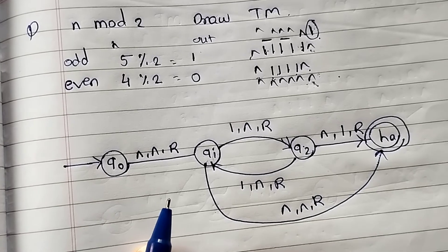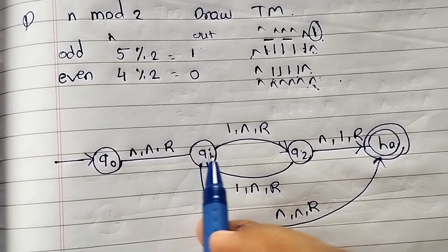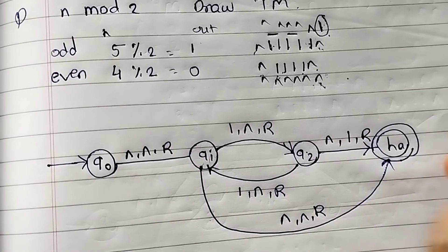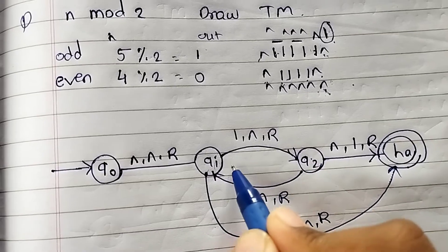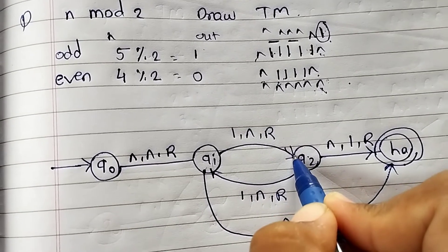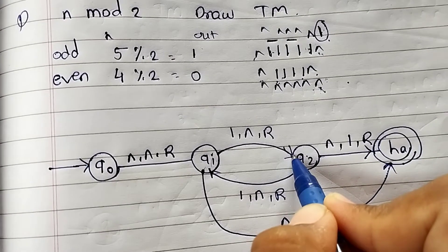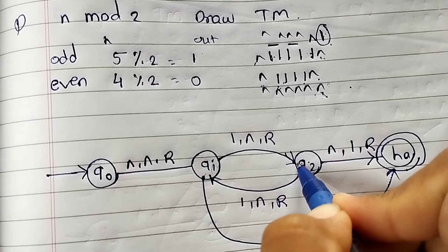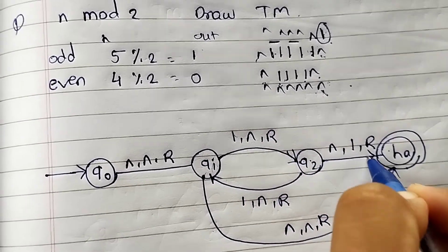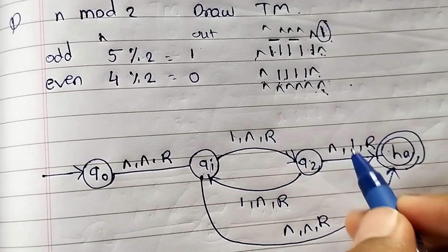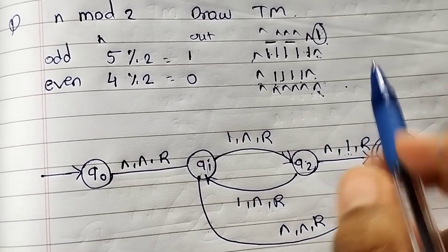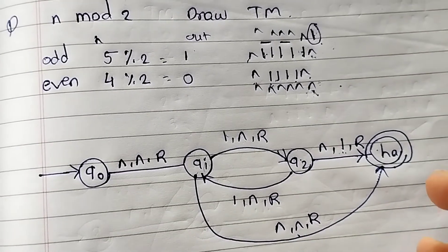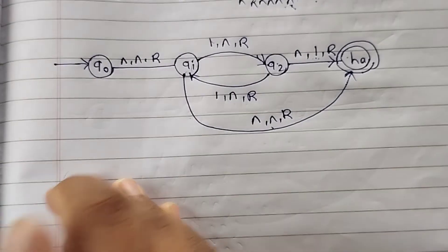So this is the logic. If an even number comes — 1 2 3 4 — we go to the final state outputting nothing (0). If an odd number comes — 1 2 3 4 5 — after the fifth symbol we convert to null, then read null, write 1, and reach the final state. Output 1 indicates an odd number; output null (0) indicates an even number. This is the complete logic for n mod 2.